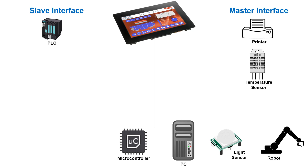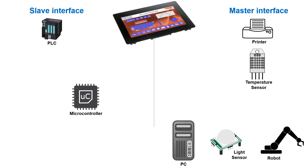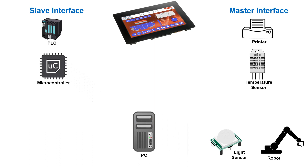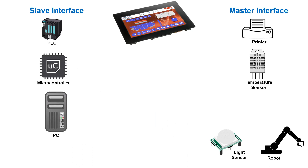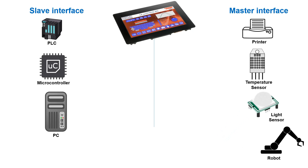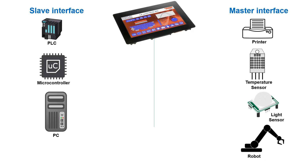Seen from the UniTFT's perspective, a microcontroller and PC are pretty much the same as the PLC — a UniTFT is connected as slave. A light sensor to adjust the background brightness to the environment is connected via the master interface, just like a temperature sensor or any other sensor. An actor, like a robot, is also connected to the master interface, and the UniTFT controls its status.